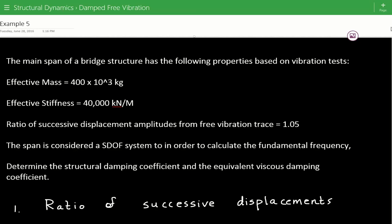The effective mass is equal to 400,000 kilograms, the effective stiffness is equal to 40,000 kilonewtons per meter, and the ratio of successive displacement amplitudes from free vibration trace is equal to 1.05.